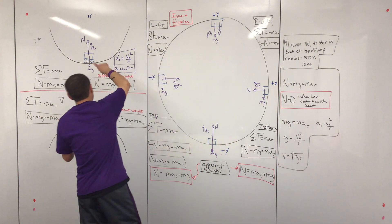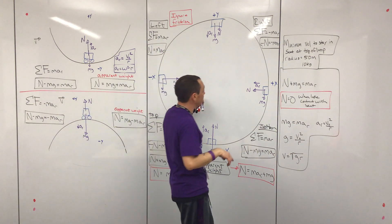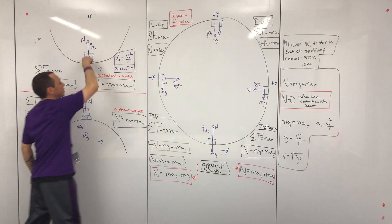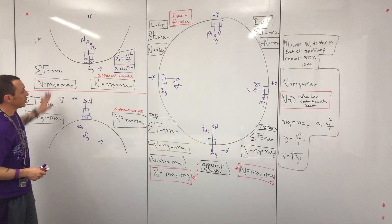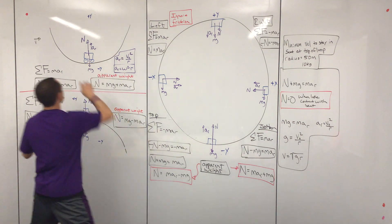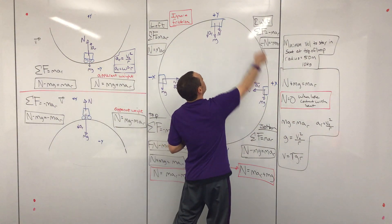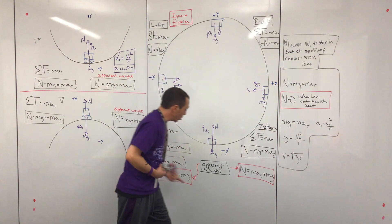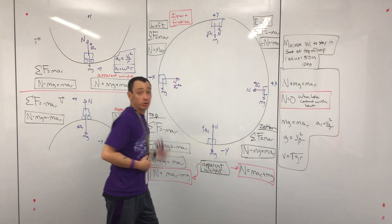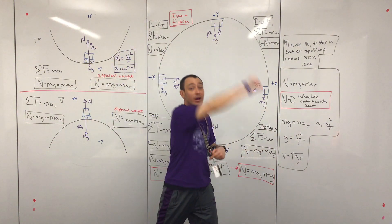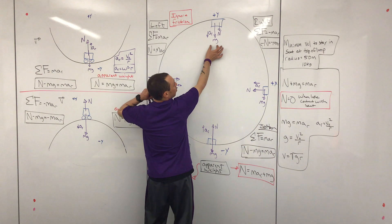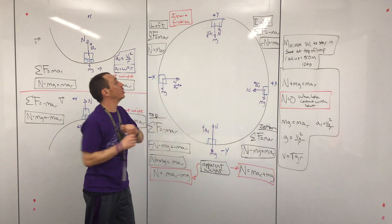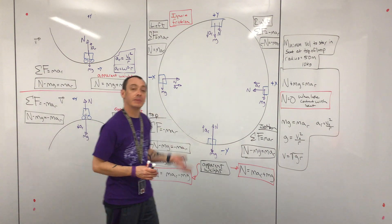This is true for both the dip and hump situations. Keep in mind: any situation that looks like this — rolling a ball over a hill, rolling a ball through a dip — it doesn't have to be a car. These equations won't change no matter what the object is, as long as it's moving through the dip or over the hump. This could be a roller coaster, a motorcycle, or even someone swinging a bucket with water in a circle.